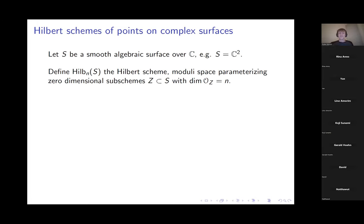A typical subscheme with structure sheaf of dimension n is like n disjoint points, but you could also have more interesting subschemes — for example, an n-th order infinitesimally thickened fuzzy point. That would also be a point in Hilb_n.